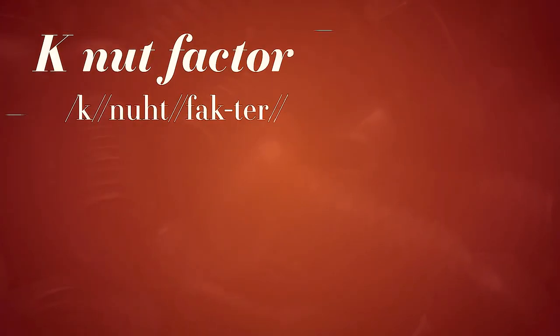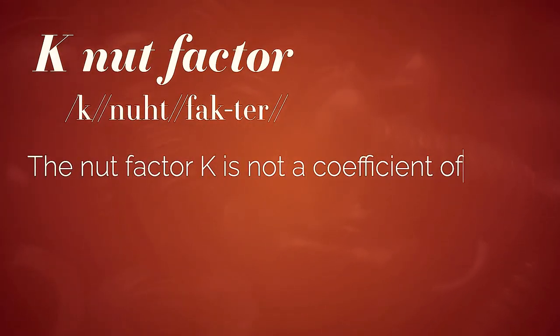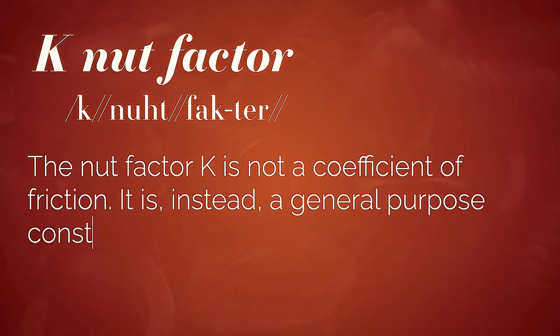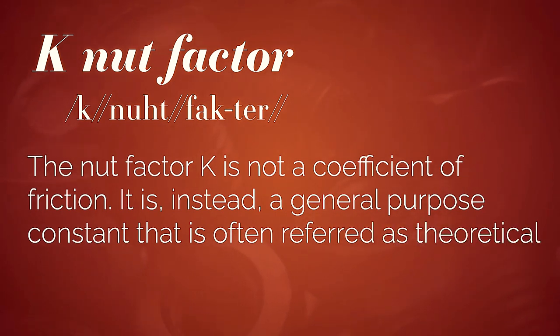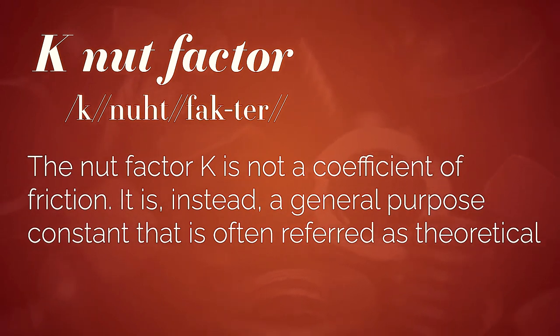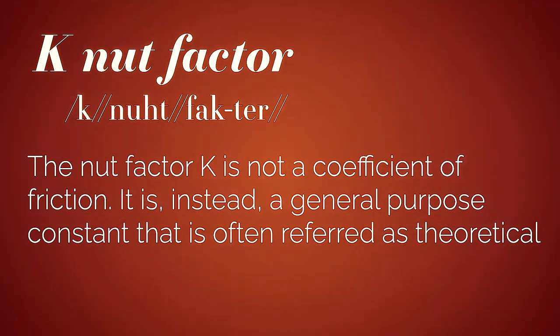In an effort to simplify things, fastener companies have developed what is called the K-nut factor. This is a constant given to a particular fastener, but it's not the true coefficient of friction — it is a general purpose constant that is always referred to as a theoretical number. It will always be supplied with an asterisk noting that your results may vary and that you should do testing to make sure you are getting the correct value. The use of the K-nut factor helps reduce the size of the formula and gives us a very good starting point when looking to develop a torque specification based off of force: clamp force times the diameter multiplied by the K-nut factor.